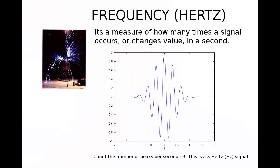The final unit we'll talk about is frequency, measured in hertz. Hertz is a measure of how many times a signal occurs or changes value during a second. If you look at the diagram here, you can count the number of peaks in one second — with time along the bottom and voltage on the left-hand side — and if you get a figure of three, that is a three-hertz signal.